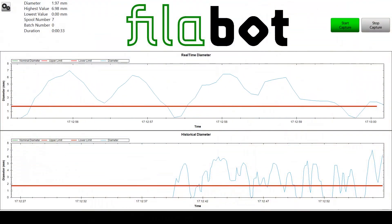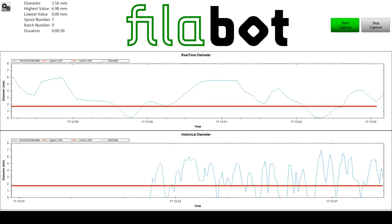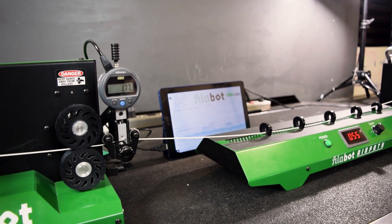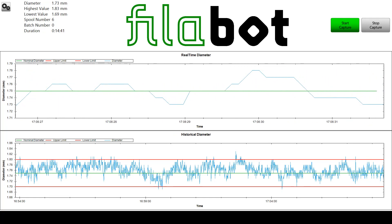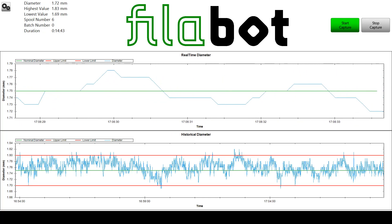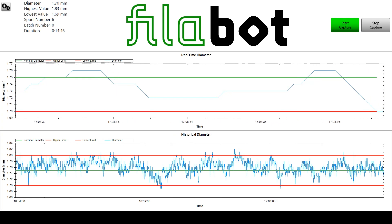The software displays a real-time graph of the data in addition to creating log files. Graphing the filament diameter allows users to make sure the filament remains in spec throughout the extrusion process. It also aids in troubleshooting consistency issues.